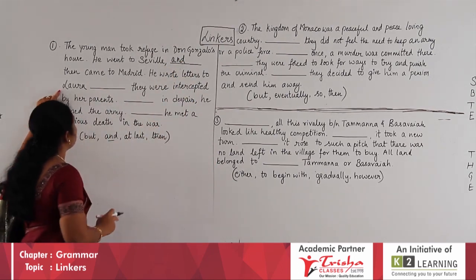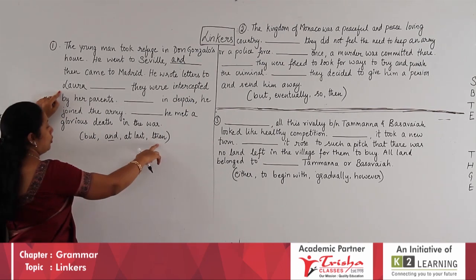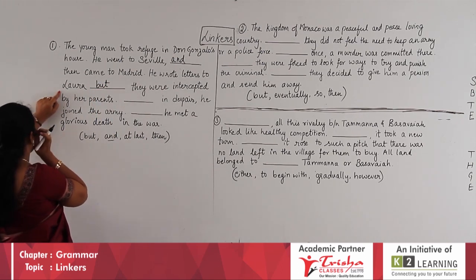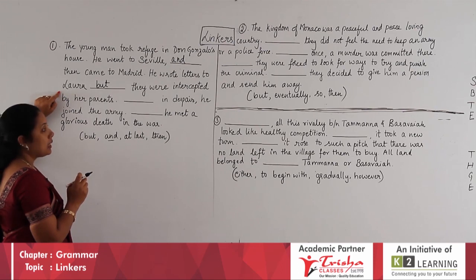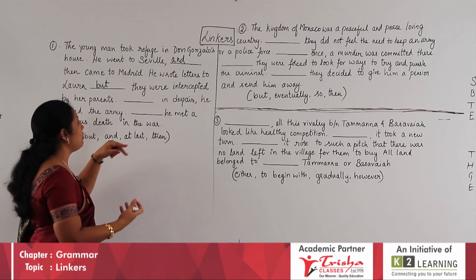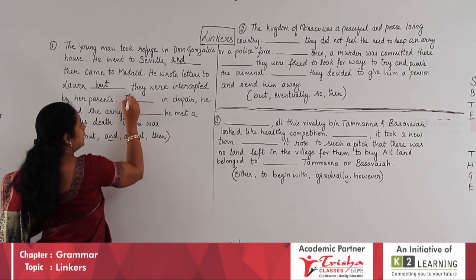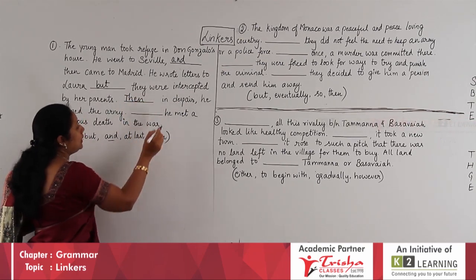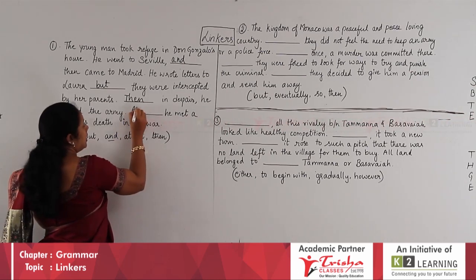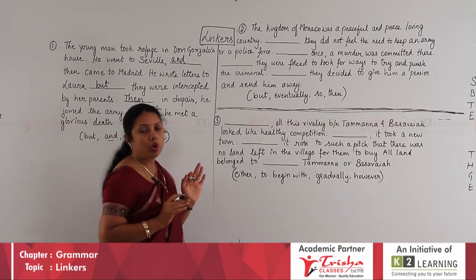'He wrote letters to Laura BUT they were intercepted by her parents' — BUT gives contrast here. For the next blank, 'THEN in despair he joined the army' — THEN fits for sequence. Finally, 'AT LAST he met a glorious death in the war' — AT LAST must come at the end only. So the answers are: AND, BUT, THEN, AT LAST.